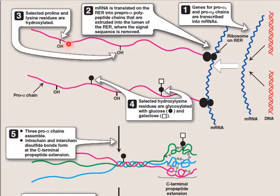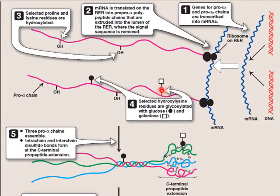After hydroxylation of proline and lysine residues of pro-alpha chains, glycosylation occurs: selected hydroxylysine residues become glycosylated with glucose and galactose. After glycosylation, three pro-alpha chains assemble together.